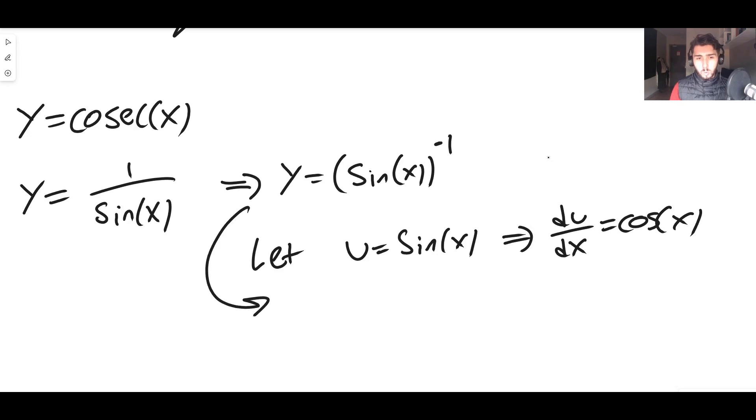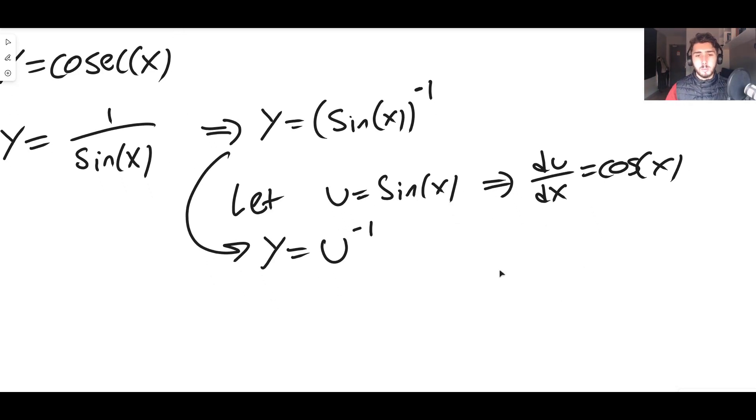Also though, it means that Y is equal to u to the minus 1, because u is sin(x) and Y is sin(x) to the minus 1. So of course, Y is u to the minus 1. We also know how to differentiate this: dy/du using the power rule is minus 1 times u to the minus 2.